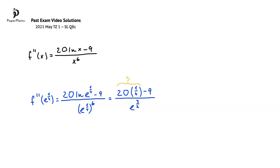20 times 1 fourth is 5, so we end up with 5 minus 9, so negative 4, divided by e to the power of 3 over 2. Since the numerator here is negative and the denominator is positive, we can write that the second derivative at e to the power of 1 fourth is less than 0, so negative, and therefore p is a local maximum.